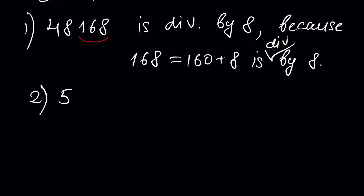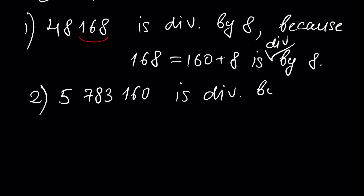Second example: the number 5,070,783,160 — is it divisible by 8? Because the number formed by the last three digits, 160, is divisible by 8, yes it is.